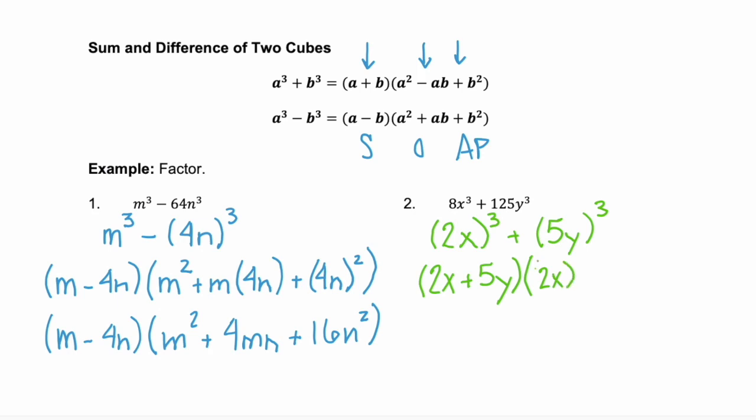Then our trinomial is our first, 2x, squared, minus our first term, 2x, times our second, 5y, plus our second term, 5y, squared.